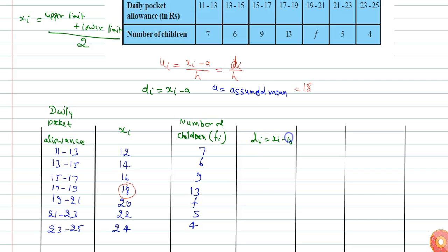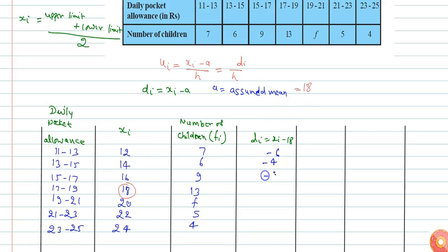Di will be Xi minus 18. So: 12 minus 18 is minus 6, 14 minus 18 is minus 4, 16 minus 18 is minus 2, 18 minus 18 is 0, 20 minus 18 is 2, 22 minus 18 is 4, and 24 minus 18 is 6.